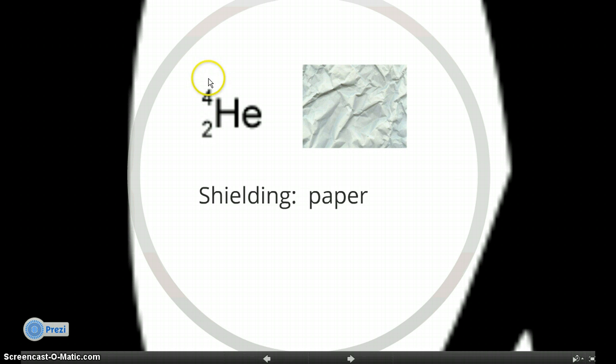The 4, if you remember from the beginning of the school year, the top number here is the mass number. So that's the number of protons plus neutrons. And the number at the bottom is the number of protons, just the atomic number. So this helium nucleus has 2 protons and a mass of 4, which means it has 2 neutrons. We can shield ourselves from alpha particles with paper. They're fairly big particles.